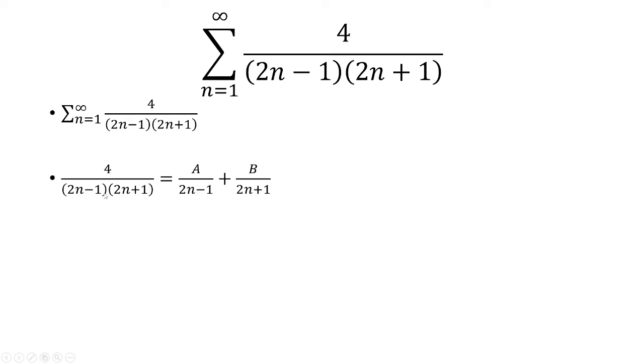So at this point, I'm going to multiply both sides by 2n minus 1 times 2n plus 1. When I multiply that by the first fraction, the denominator cancels and I'm left with 4. When I multiply it by the second fraction, the 2n minus 1 cancels and I'm left with A times 2n plus 1. In the last fraction, the 2n plus 1 is going to cancel, so I'm left with B times 2n minus 1.